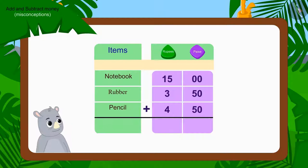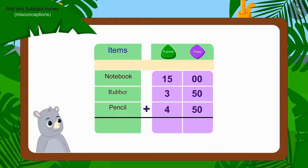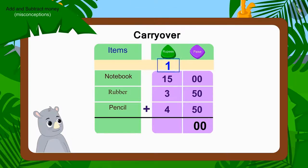Let's find this out by putting this addition together. What shall we do first? We'll add the numbers of paise. How much money do we get by adding 50 and 50 paise? 100 paise. How do we write this? Yes, we will write 100 paise as carryover in this way.